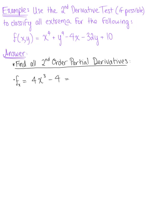We can factor out a common 4, so we have 4 multiplied by (x cubed minus 1). Then we have the first order partial with respect to y, which is 4y cubed minus 32. We can factor out a common 4 here, giving us 4 multiplied by (y cubed minus 8).